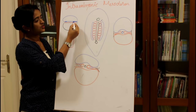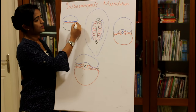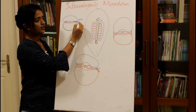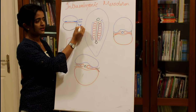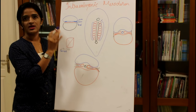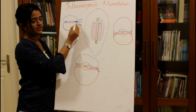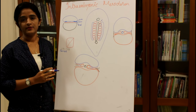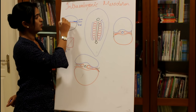The trilaminar germ disc has three germ layers: the ectoderm, the mesoderm, and the endoderm. The mesoderm within the embryo is called intra-embryonic mesoderm, and it is derived from the primitive streak in the ectoderm. Up to this point we know the development of intra-embryonic mesoderm.